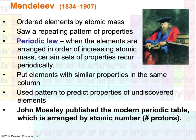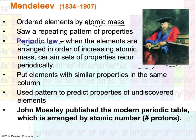The first person to arrange the known elements in any type of order was Mendeleev. He ordered the elements known in his time by atomic mass, and noticed that elements ending up in the same vertical column had similar properties. He called this periodic behavior the periodic law. During his time, only a handful of elements were known — now we have something like 118 — but because of that, he was able to predict elements that were as yet undiscovered.